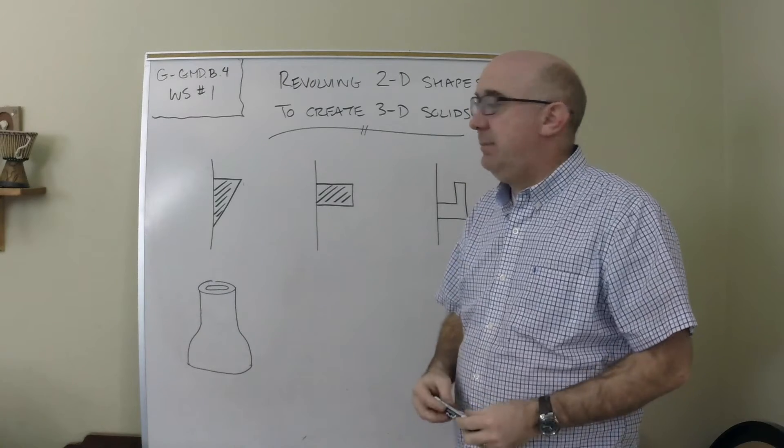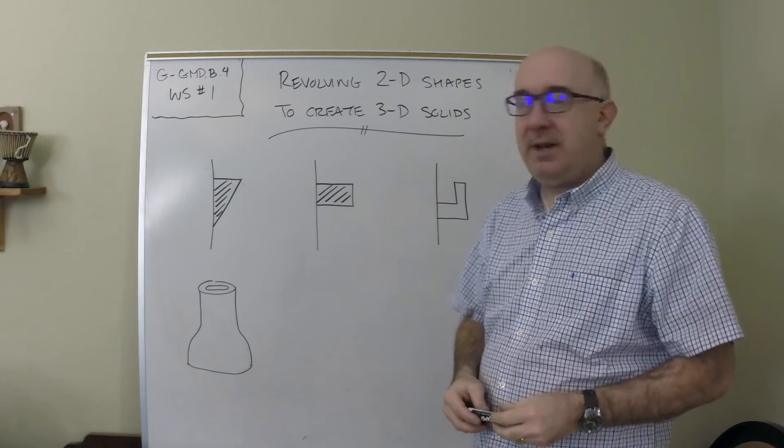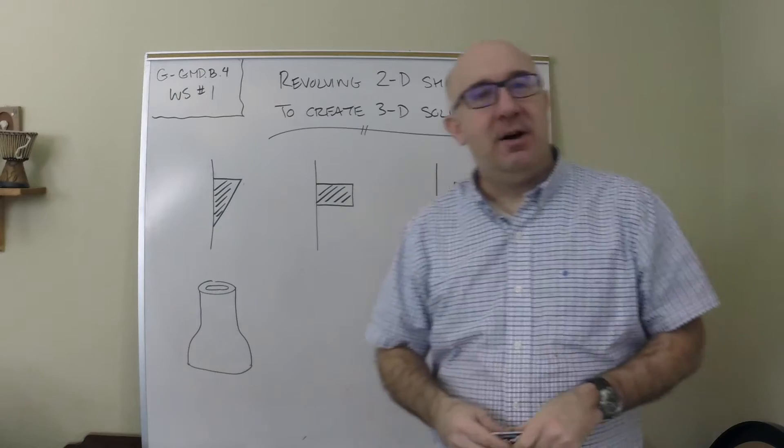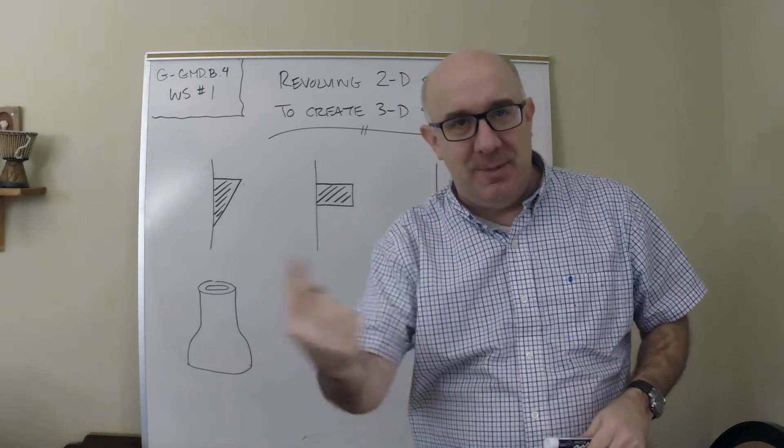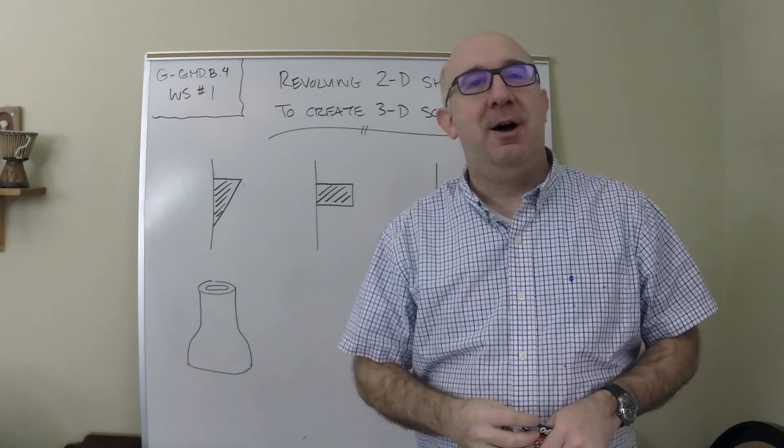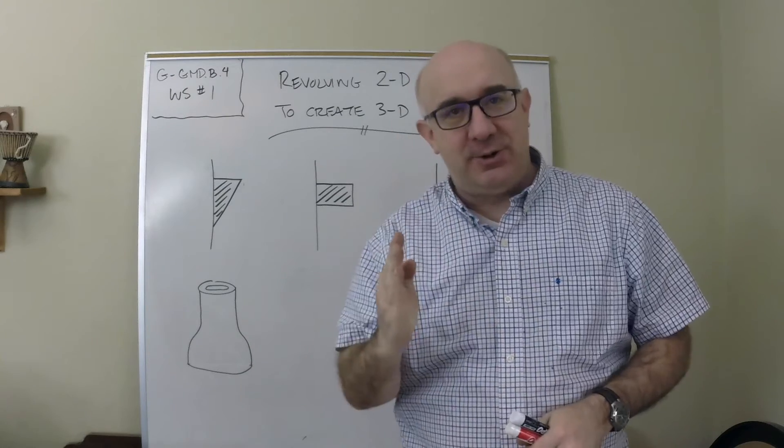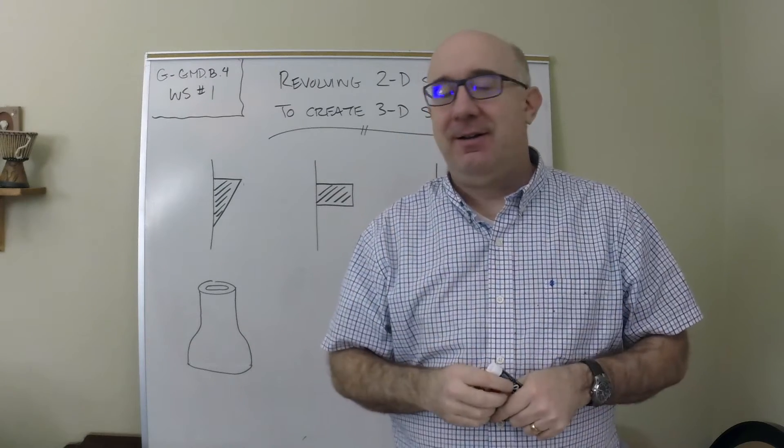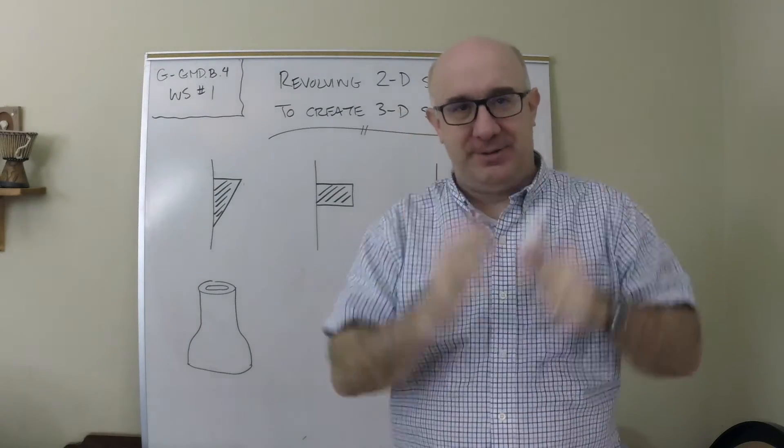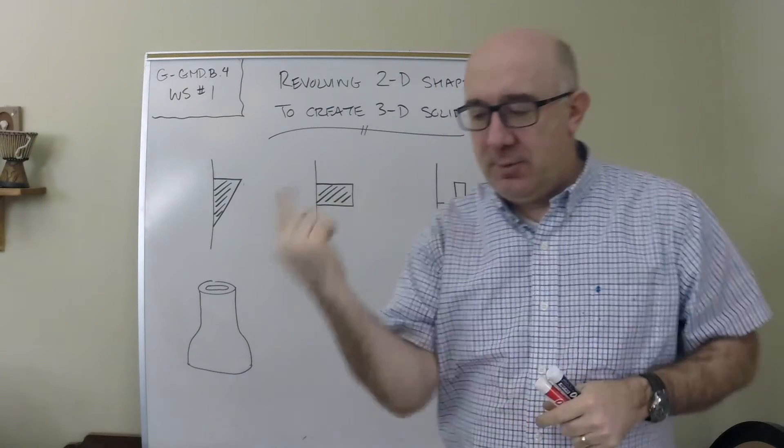We're looking at GMDB4 worksheet number one, and it's all about this idea of revolving a two-dimensional object around an axis to form a solid. Awesome stuff, great visual stuff. The idea is that if you were to spin an object, it creates volume in doing so.